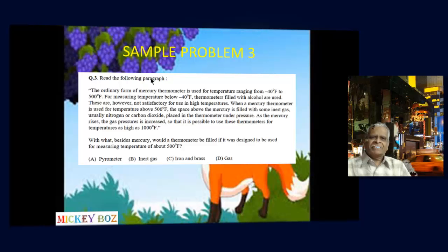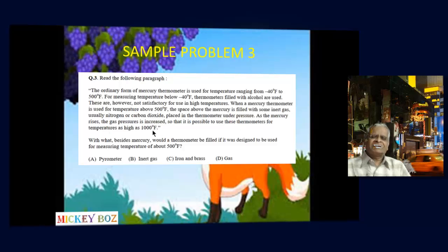Sample problem 3, question 3: Read the following paragraph. The ordinary mercury thermometer is used for temperatures ranging from minus 40°F to 500°F. For temperatures below minus 40°F, thermometers filled with alcohol are used; however, these are not satisfactory for high temperatures. When a mercury thermometer is used above 500°F, the space above the mercury is filled with an inert gas — usually nitrogen or carbon dioxide — placed under pressure, so that as the mercury rises the gas pressure increases, allowing use up to 1000°F. The question asks: what besides mercury should a thermometer be filled with if designed to measure temperatures above 500°F?